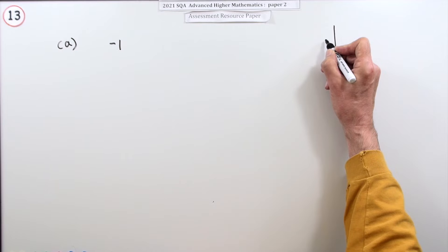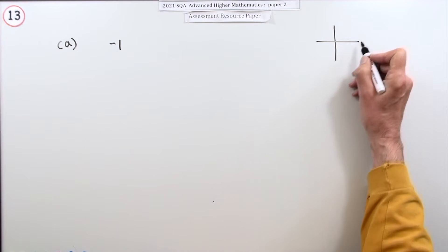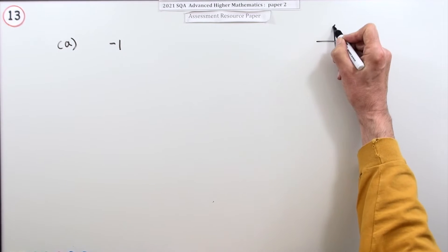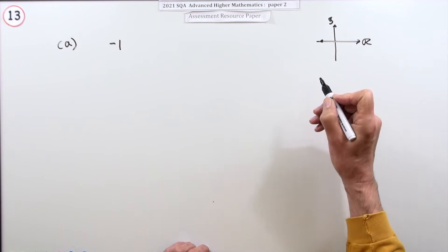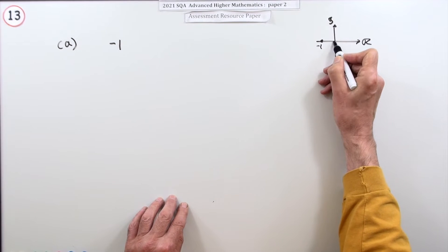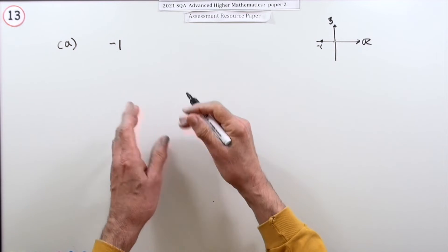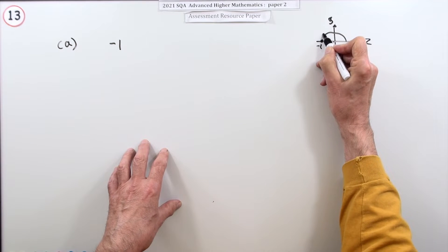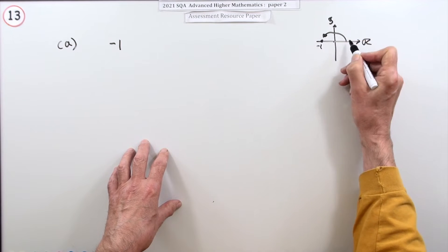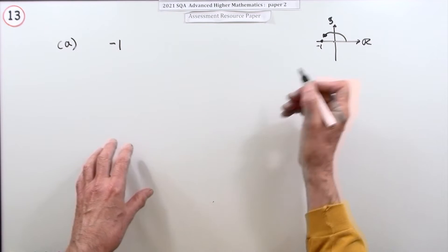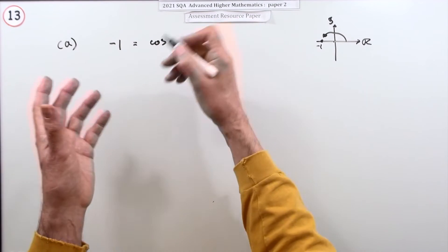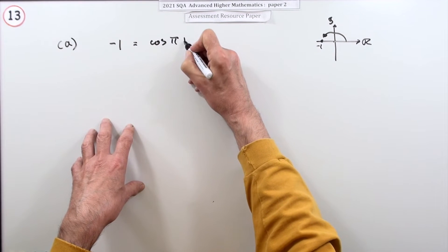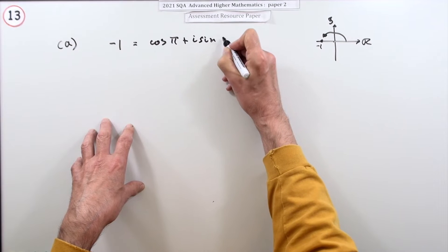The best way to do that is just draw a quick Argand diagram — that's the real part, that's the imaginary part. Where is negative one? It's over here. How far away is it? It's one, so that won't affect anything. What angle is it? It's 180 degrees, which in radians is π. So negative one is cos π + i sin π.